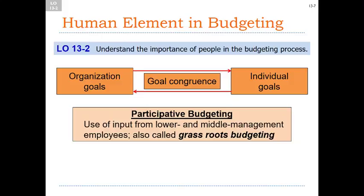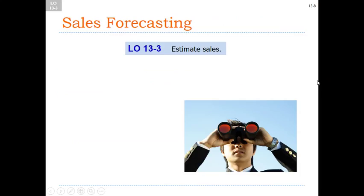One way to bring about goal congruence is to have what's called participative budgeting. This allows lower and middle management employees to participate in the budgeting process. By doing so, the hope is that they will be on board with the short-term goals involved in the budget.